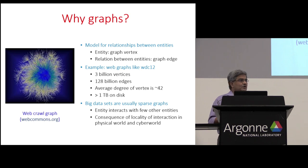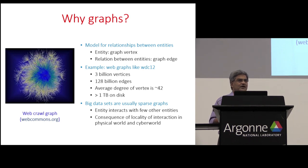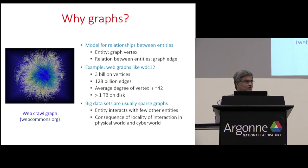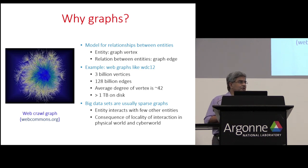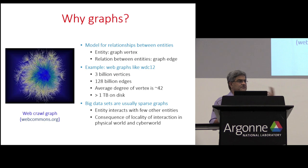Here is an example of a graph — it's a web crawl graph. If you're wondering why you can't see anything in that graph, that's because it really is an enormous graph. It's got 3 billion vertices and 128 billion edges, done by scraping the web. This is the kind of graph that companies like Google and Microsoft build. Each node represents a document on the web, and if there's a hyperlink between two documents, you represent that by a directed edge. The average degree of a vertex is just 42, making it an extremely sparse graph, and even compressed it's about one terabyte on disk.